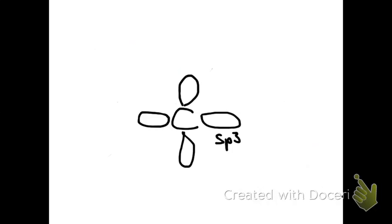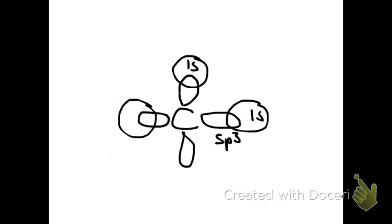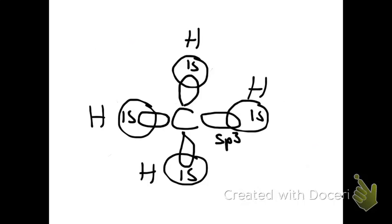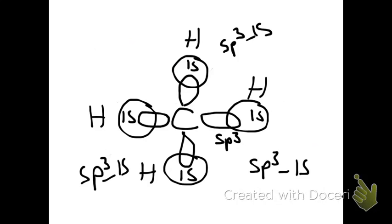We have four sp3 hybrid orbitals from carbon, each overlapping with the 1s orbital from the hydrogens. These covalent bonds can be described as sp3–1s bonds. This shows how we take atomic orbitals, make hybrid orbitals, and those hybrid orbitals overlap with other atoms' orbitals to create covalent bonds.